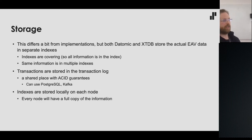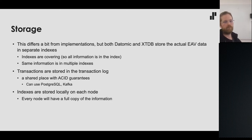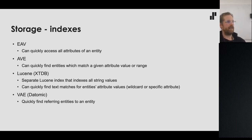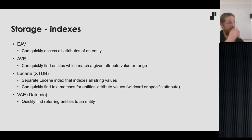Transactions are stored in a shared place with ACID guarantees — for example, Postgres or Kafka — but indexes are stored locally on each node. Each node in a cluster has its own full copy of the data. The EAV index quickly accesses all attributes of an entity; the AVE index quickly finds entities matching a given attribute value or range, useful for range predicates. XTDB has a separate optional Lucene index that indexes all string values for text matching.